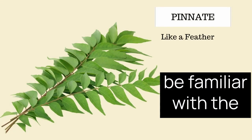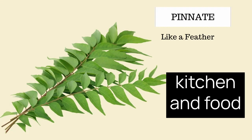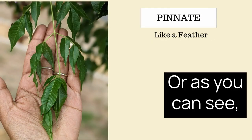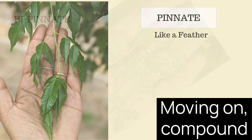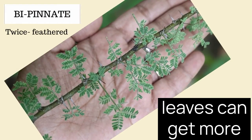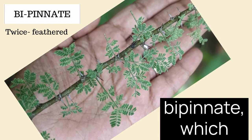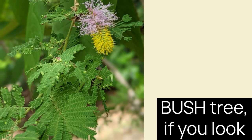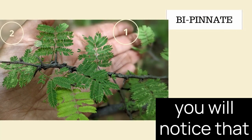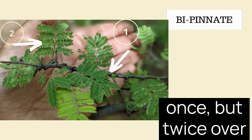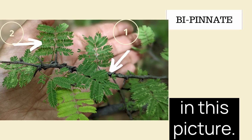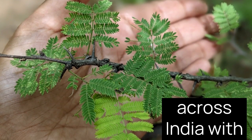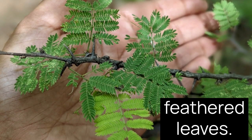Most of us would be familiar with the kadipata, or the curry leaf, in our kitchen and food — that is pinnately compound. Or, as you can see, the leaf of this bacchain tree. Compound leaves can get more detailed: they can be bipinnate, which is twice feathered, as you can see in the case of this sickle bush tree. If you look carefully at the leaves, you will notice that the leaf splits not once, but twice over. Here's a thorny babool tree, a commonly seen tree across India, with bipinnate or twice feathered leaves.